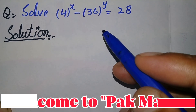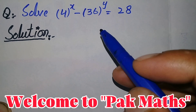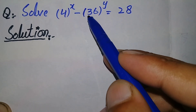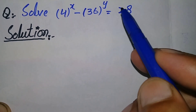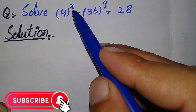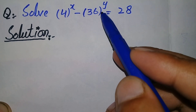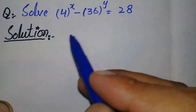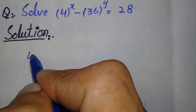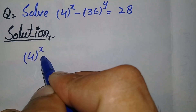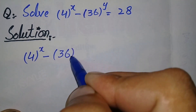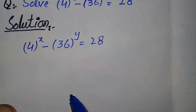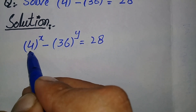Hello everyone, welcome to Parkmas. In this video I'm going to solve this viral exponential math problem. The question is: 4 raised to power x minus 36 raised to power y is equal to 28. We need to find the value of x and y. Let's start — we will write out the solution and rewrite the question.